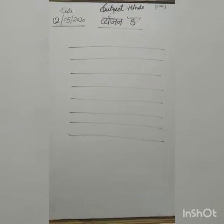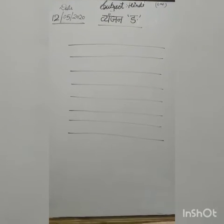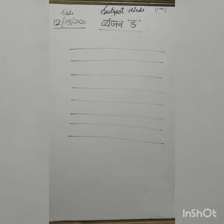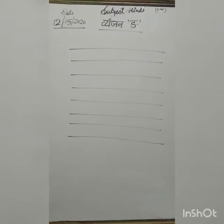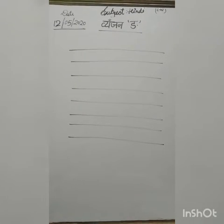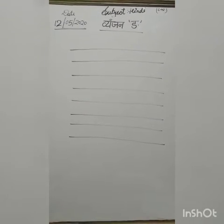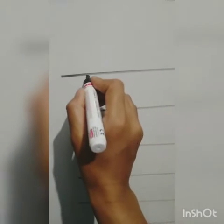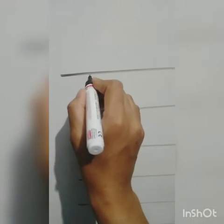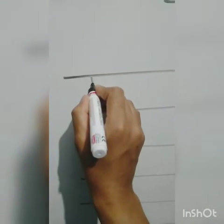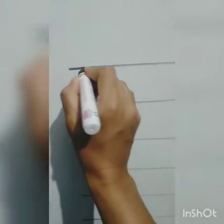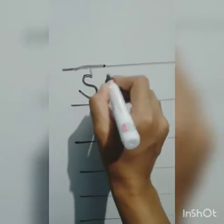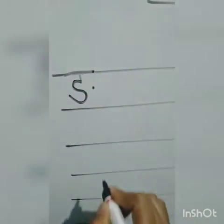First you have to note down your date 12-05-2020 and classwork. Then we have to start from the first line. First we will form a standing line, then like S, a sleeping line and a dot.